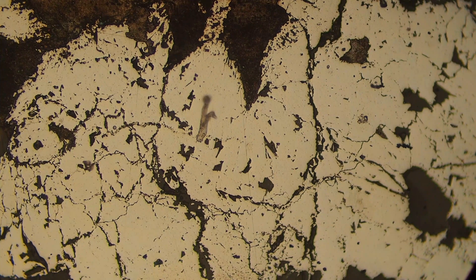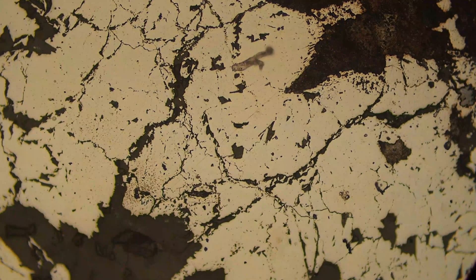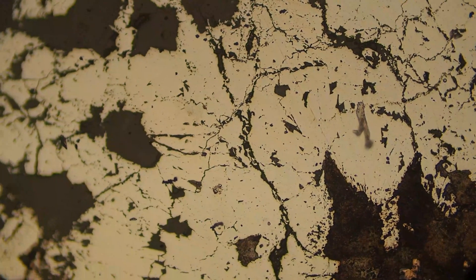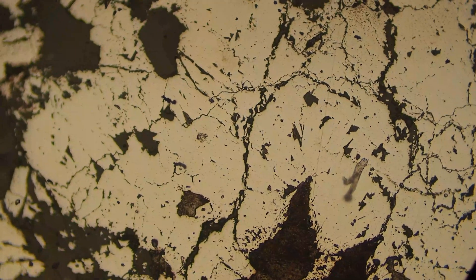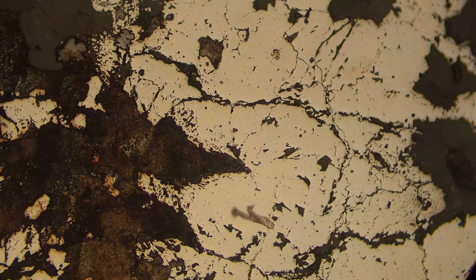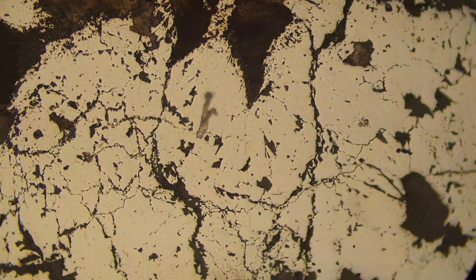So here's some arsenopyrite. As we rotate the stage you can see very subtle color changes. We're going from kind of a lighter gray color into something that's a little bit beige. You can especially see it in the center crystal there. As we rotate the stage it's going a little bit more beige.